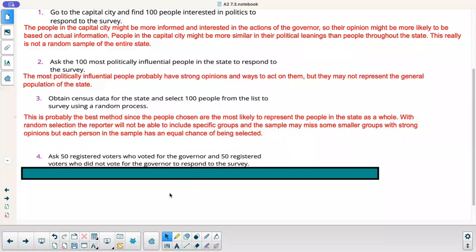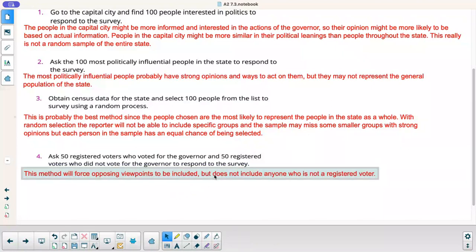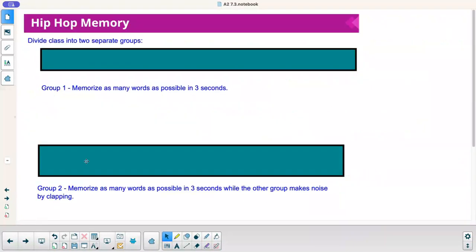Four, ask 50 registered voters who voted for the governor and 50 registered voters who did not vote for the governor to respond to the survey. This method will force opposing viewpoints to be included, but does not include anyone who is not a registered voter. I guess you could compare and contrast people who voted for him. Do they still like him? People who didn't vote for him, did their opinion change? But it's not going to be a good random sample of the state's opinion at that moment.